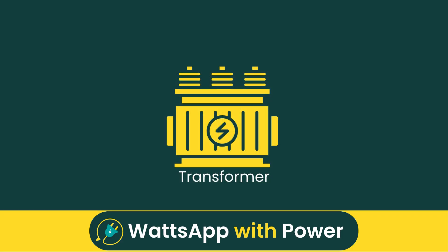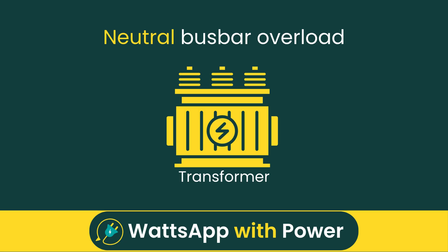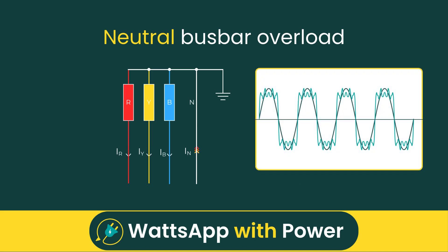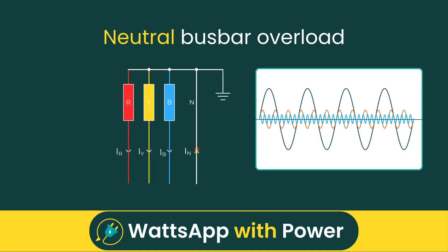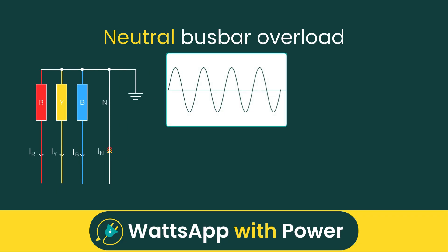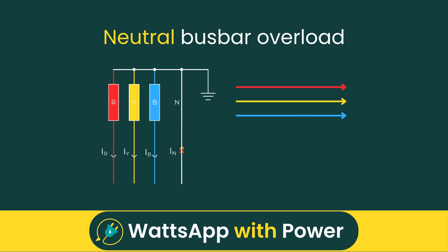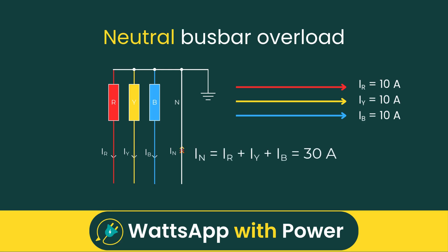Now let's look at the second critical issue: neutral busbar overload. In a typical three-phase, four-wire system with balanced linear loads, the currents on each phase mostly cancel out in the neutral wire, meaning minimal neutral current and very little heating. But with non-linear loads, we run into problems — especially with third-order harmonics such as the 3rd, 9th, and 15th harmonics. Unlike fundamental currents, which are 120 degrees apart on each phase, these third-order harmonic currents are in phase on all three phases. So instead of cancelling out in the neutral wire, these harmonic currents add up. For example, if each phase has a third harmonic of 10 amps, these combine in the neutral, resulting in 30 amps of third harmonic current. This additive behavior causes significant heating of the neutral bus bars that can exceed the thermal rating of the transformer neutral bus.